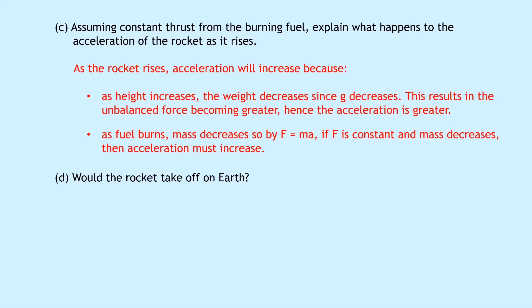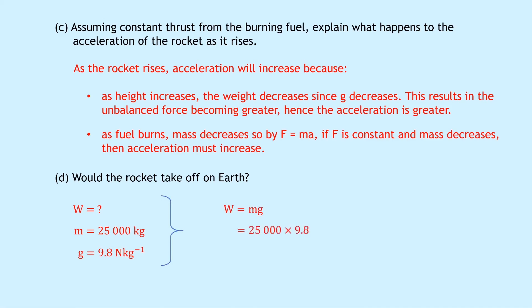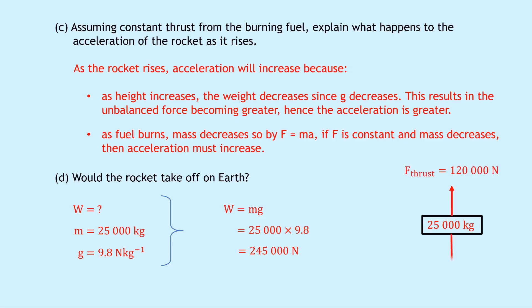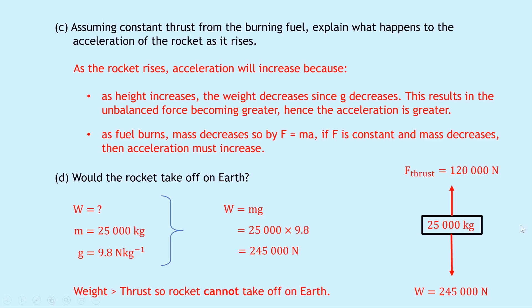Part D asks whether the rocket would take off on Earth. We calculate the rocket's weight on Earth using W equals MG: 25,000 times 9.8 equals 245,000 Newtons. Drawing a free body diagram for Earth: thrust is 120,000 Newtons upward, but the weight is 245,000 Newtons downward. The weight downward is greater than the thrust upward, so the unbalanced force is downward and the rocket cannot take off on Earth.